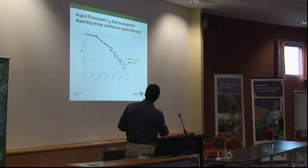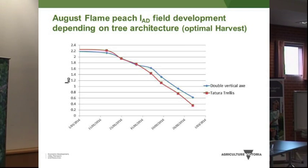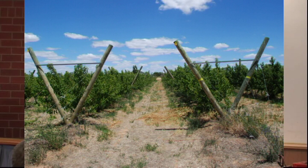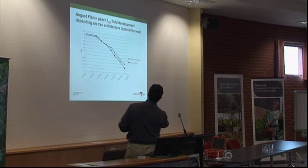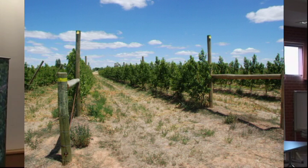When we are able to define the maturity class, we can understand how the fruit is developing in quality across the entire pre-harvest and post-harvest period. For example, this is an Augusta plain peach where we measured the development of maturity according to the IAD value — an index of maturity — across two different training systems: the Tatura trellis, which is a V-shape in one direction, and the double vertical axis, which is a V in the opposite direction.